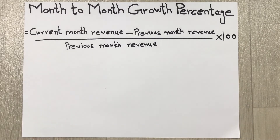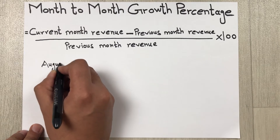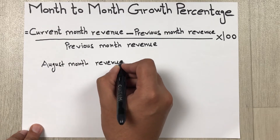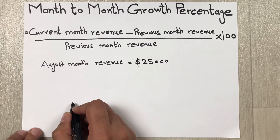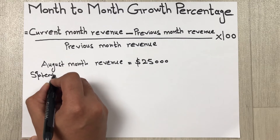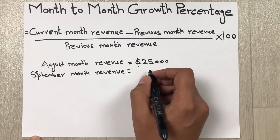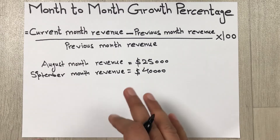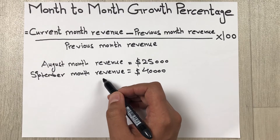So let's go through an example. We'll assume the August month revenue is equal to $25,000, and the September month revenue is equal to $40,000. In this case, August becomes the previous month and September is the current month.